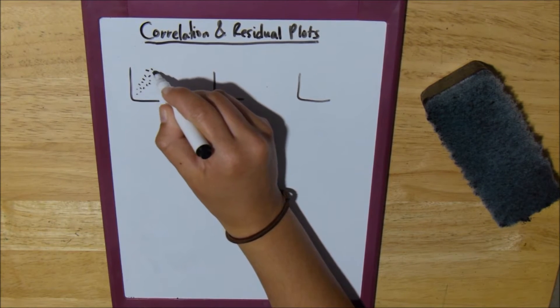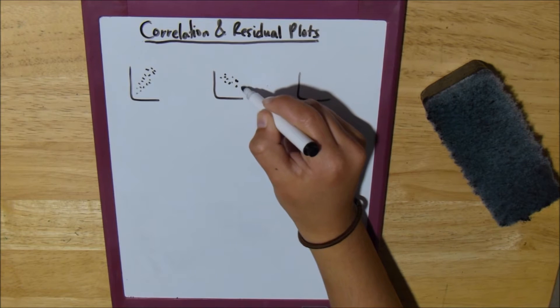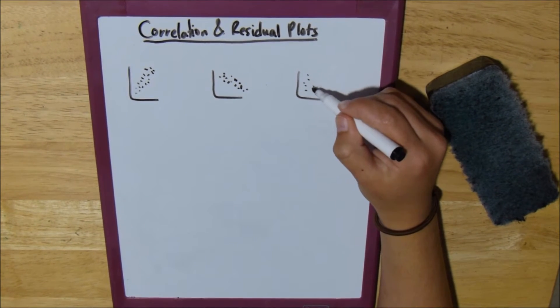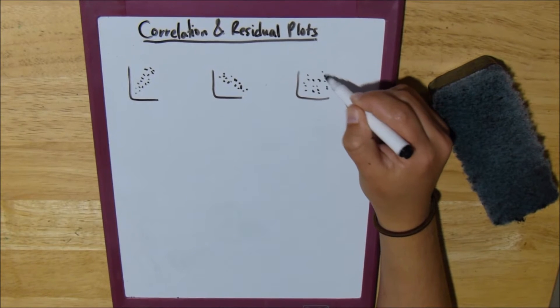Let's say we have a graph that goes like this, and say we have a graph that goes like this. These are all scatter plots just by the way. And then say we have a graph that just all the points are just all over the place.